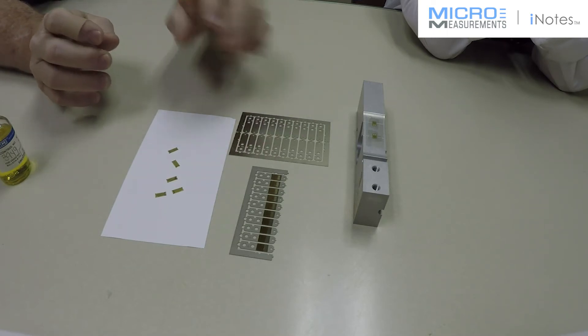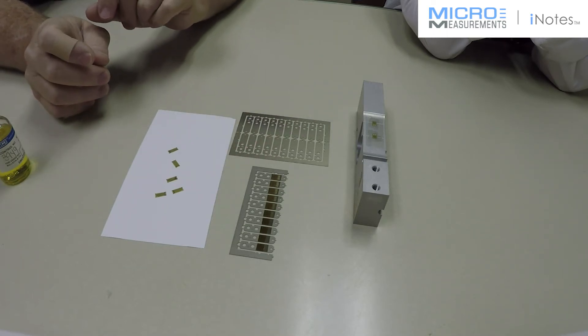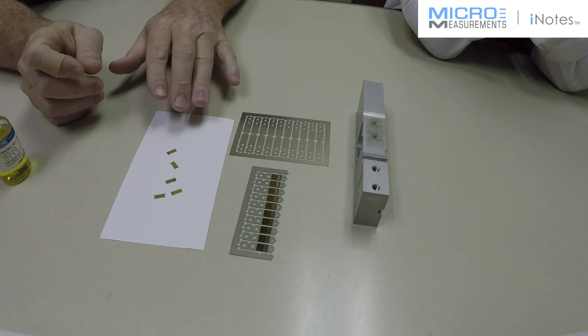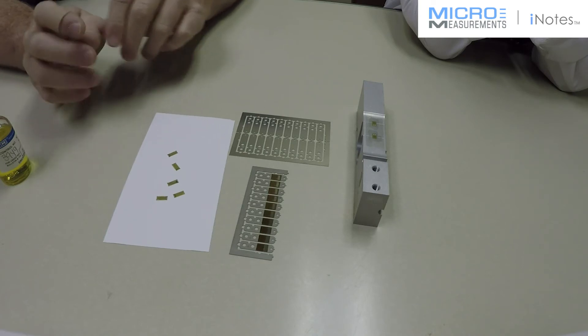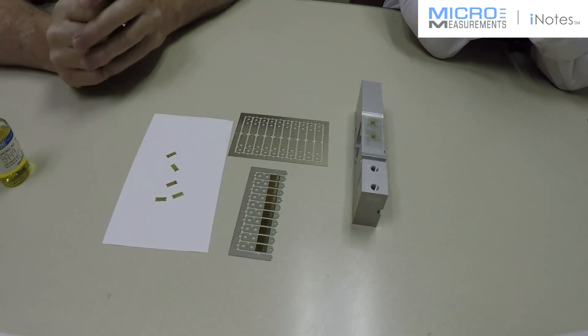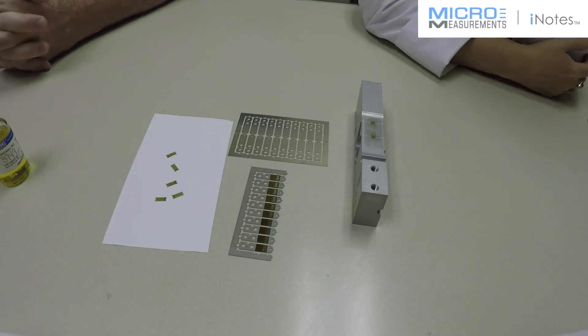So this is a convenience to customers. A lot of transducer manufacturers use this technique, where they just take the gauges out of the package - they already have the adhesive on it, they're ready to go. So it just reduces one more step in the process. That's great. Thanks.